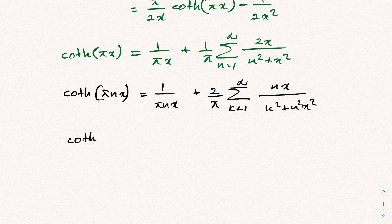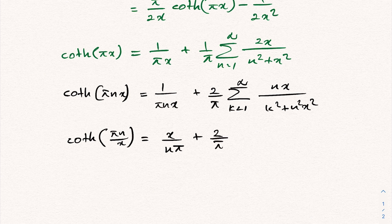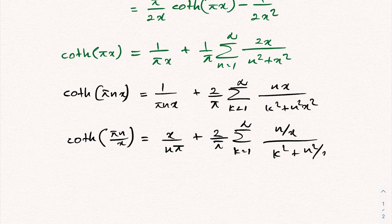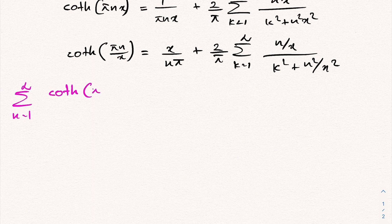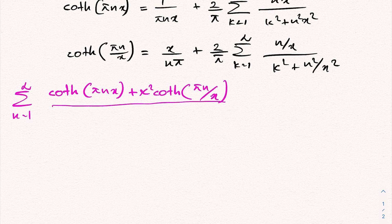We also need hyperbolic cotangent of pi n over x. Plugging in n over x instead of x: hyperbolic cotangent of pi n over x equals x over n times pi, plus 2 over pi times sum from k equals 1 to infinity of n over x over k squared plus n squared over x squared. Our target sum is from n equals 1 to infinity of hyperbolic cotangent of pi nx, plus x squared times hyperbolic cotangent of pi n over x, all over n cubed.